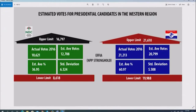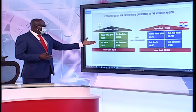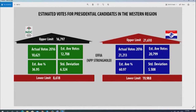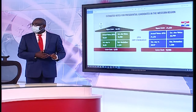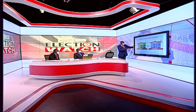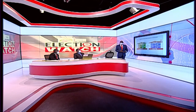Efia constituency is another NPP stronghold. The estimated average is 36.95% for NDC and 60.97% for NPP, translating to estimated votes of 12,000 plus for NDC and 20,000 plus for NPP. NPP actually had 21,000 plus, while NDC had just over 10,000 — dropping about 2,000 votes — while NPP gained about 400 votes.